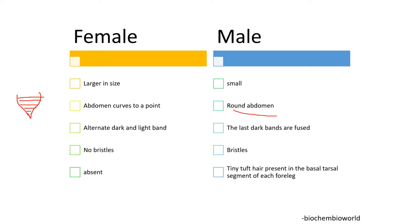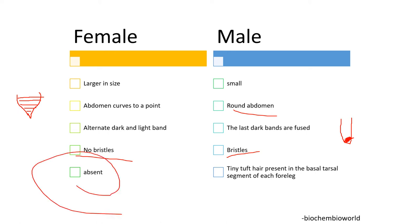In males, the last band fuses to form a dark patch at the posterior. No bristles are found in case of females, whereas bristles are present in the genital areas of males. Another characteristic to distinguish between male and female is a tiny tuft of hair present in the basal tarsal segment of each foreleg, also known as sexcomb. This tiny tuft of hair is absent in case of females.